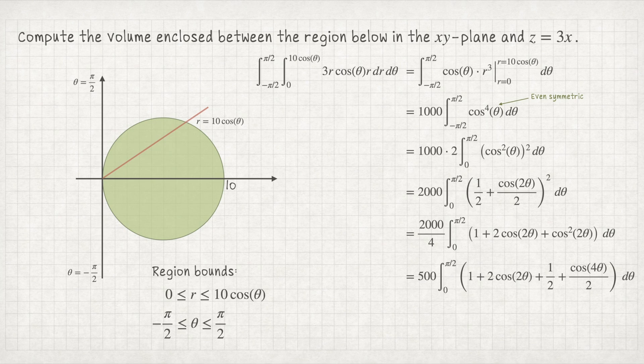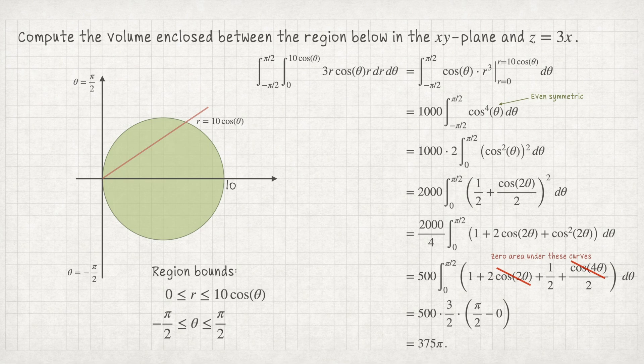This integral is straightforward: cos2θ and cos4θ each enclose equal positive and negative area between 0 and π/2, so their definite integrals are both 0. We're left with integrating 3/2 from 0 to π/2 — just integrating a constant. So we have 500 × (3/2) × (π/2 − 0), which equals 375π.